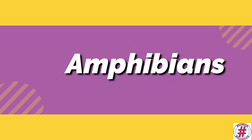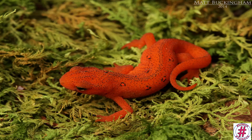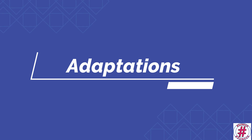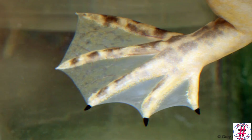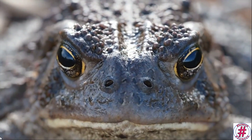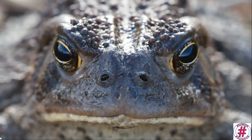Amphibians: animals that can live both on land and in water are called amphibians. Frogs, newts, and salamanders are some amphibians. Their adaptations: their hind legs have webbed feet that help them swim in water. They breathe through their skin when in water and with their lungs when on land. They have limbs that enable them to move on land.